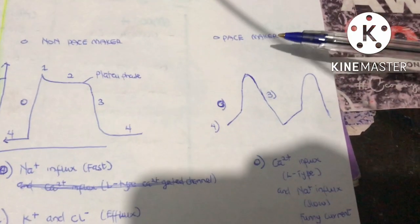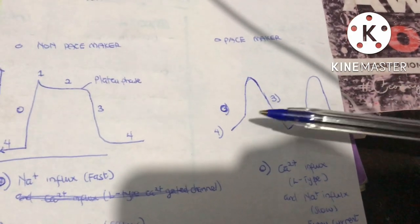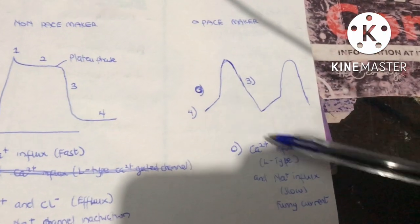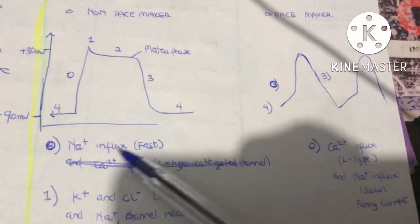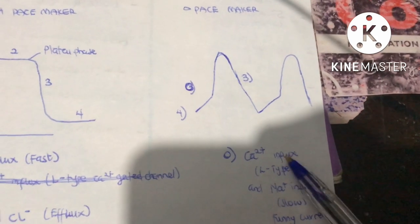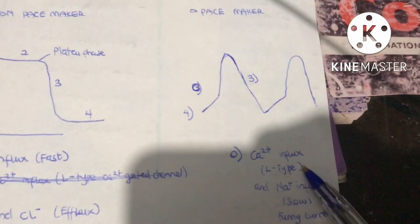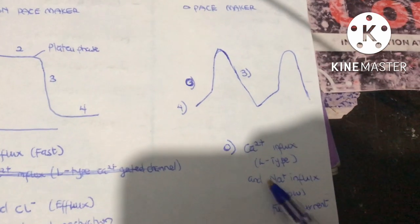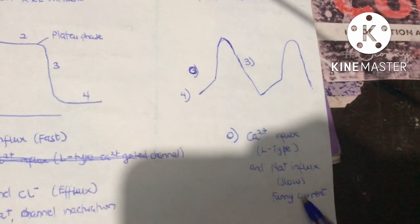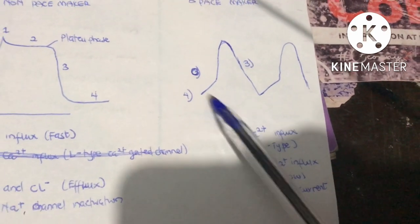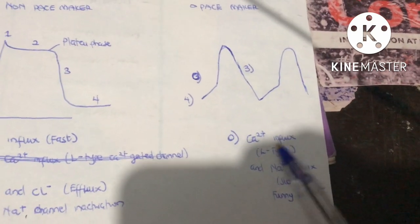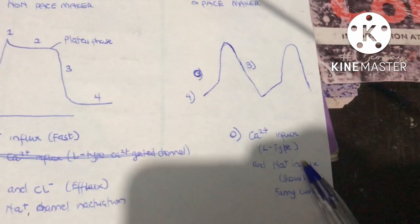The pacemaker action potential involves three phases: phase 0, phase 3, and phase 4. Phase 0 is depolarization, but here it is due to calcium influx through L-type voltage-gated calcium channels — unlike the non-pacemaker where it is due to sodium influx — along with slow sodium influx called the funny currents.